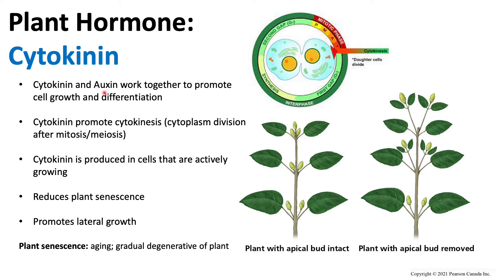And if we didn't have auxin but had lots of cytokinin? Well, if nothing is growing, there's nothing to split. So cytokinin and auxin are both required for growth and splitting, which together promote cell growth and differentiation. Cytokinin is produced in cells that are actively growing, which makes sense because wherever a plant is growing, it will need both cytokinin and auxin.